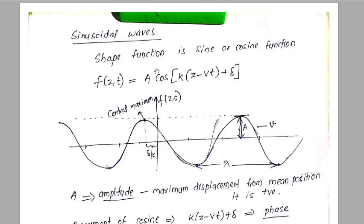The shape function for sinusoidal waves is cosine or sine. Both sine and cosine can be used, and they are related through a phase factor: sine of theta plus a phase gives cosine. So we can write both sine and cosine using cosine with a phase constant. The wave is represented as A into cosine of (kz minus vt plus delta), where this is the shape of the wave.